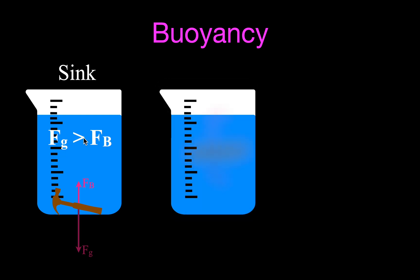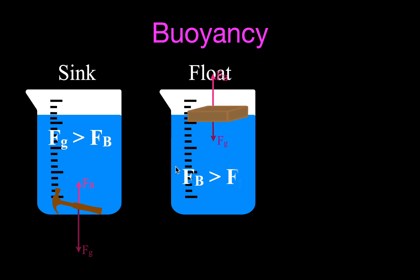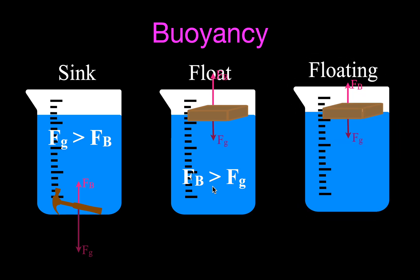For floating objects, let's say we put a piece of wood in water — push it fully underwater. It will float because the weight of the object is less than the buoyant force. From Archimedes' Principle, that means the weight of the fluid that is displaced is greater than the weight of the object, so the object is going to float. When it reaches the surface and is floating, the buoyant force and the weight of the object will be equal because it will be in equilibrium.